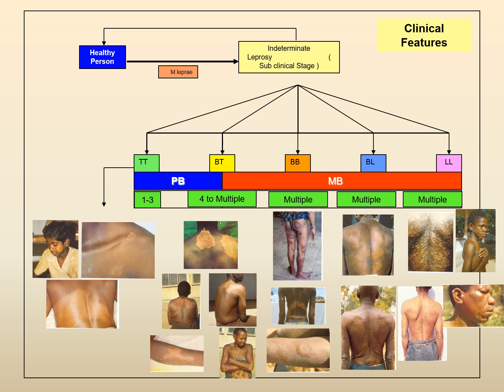Photographs illustrate the spectrum: in tuberculoid or borderline tuberculoid cases there are generally 1 to 3 larger asymmetrical skin patches typical of paucibacillary leprosy. In borderline tuberculoid, 4 to 5 skin lesions are seen. At the lepromatous end of leprosy, numerous skin lesions or nodules are present.